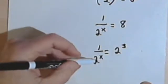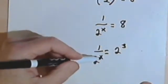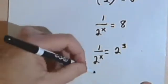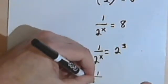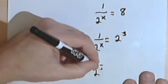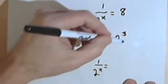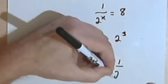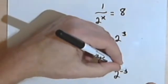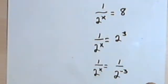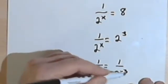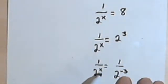Since I've got an x in my denominator on the left side of the equation, I'm going to try to get the right side of the equation to also have a denominator. So I'll have 1 over 2 to the x equals I'm going to take this 2 to the 3rd and make it 1 over 2 to the negative 3. And now if 1 over 2 to the x equals 1 over 2 to the negative 3, then x must equal negative 3.